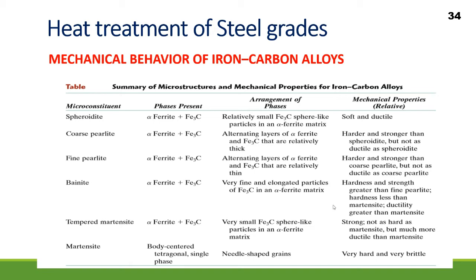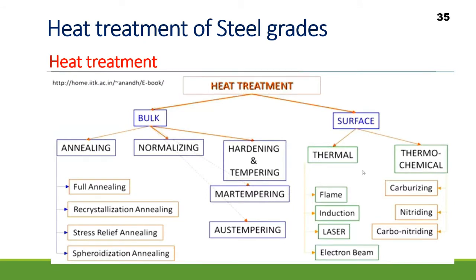There is a summary of all the different products obtained after austenite undergoes eutectoid transformation — the phases present, the mechanical properties, and the microstructure obtained are all given. Heat treatments are basically of two types: bulk treatment and surface heat treatment. Surface heat treatment means you apply heat treatment only to the surface of your sample, not to the bulk.